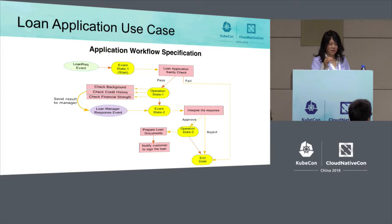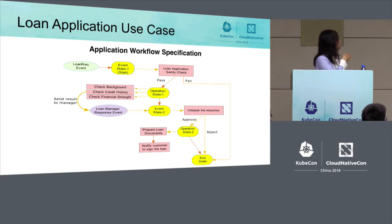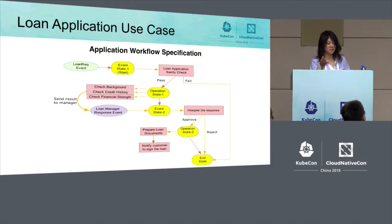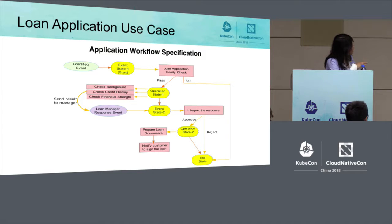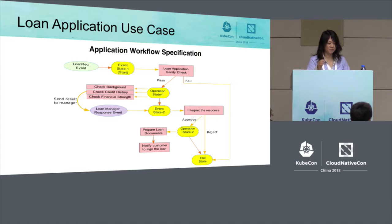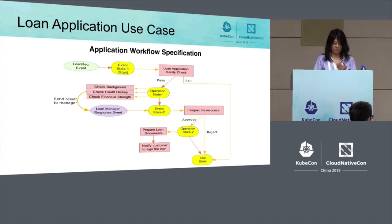After that, the workflow transitions to event state two to wait for the manager's approval response. When the manager's response is received, a function is triggered to interpret it. If the response is a rejection, the workflow ends. If it's an approval, the workflow transitions to operation state two, where two functions run in sequence: the first prepares the loan documents, and after that completes, a second function sends a notification to the customer to proceed with the loan. Then the workflow transitions to the end state.